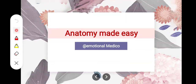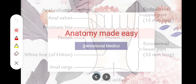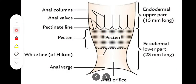In this video we will take a look at the different parts of the anal canal. The anal canal consists of three main portions: upper one-third, middle one-third, and lower one-third. The upper one-third is called the mucous part, the middle one-third is called the pecten part or transitional zone, and the lower one-third is called the cutaneous or subcutaneous part.